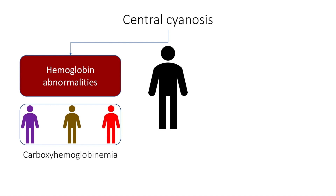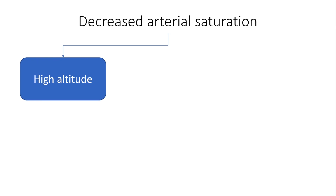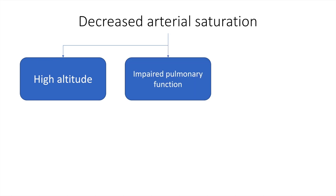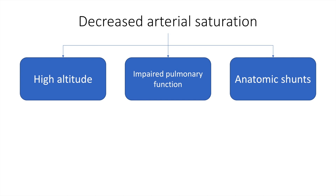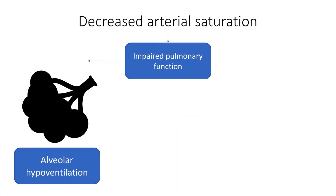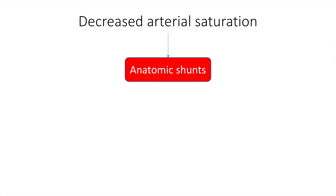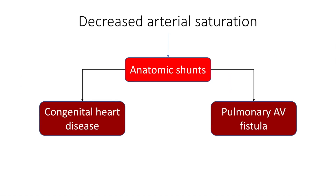Central cyanosis may also be due to reduced arterial oxygen saturation. The causes of decreased arterial oxygen saturation are high altitude, impaired pulmonary function, and anatomic shunts. If Steve went to the mountaintop, he would have a low FiO2, resulting in central cyanosis. Impaired pulmonary function — such as due to alveolar hypoventilation or impaired diffusion — and anatomic shunts such as congenital heart disease and pulmonary arteriovenous fistula may also cause decreased arterial saturation and central cyanosis.